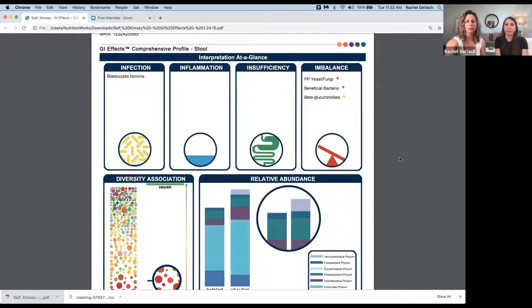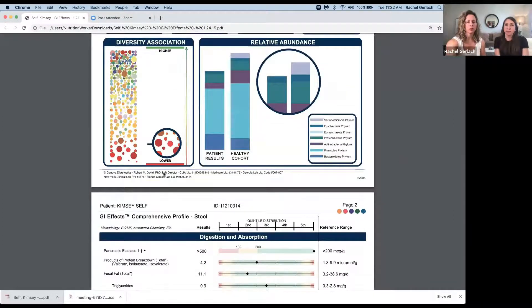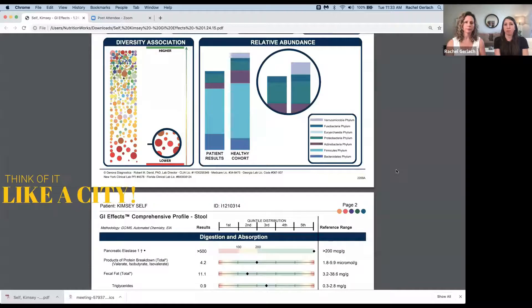So let's move down here. Let's look at this diversity association. What does that indicate? So diversity association and relative abundance—I'm going to give an analogy. You can think of the gut microbiome like a city. Both of these are reflective of the microbial diversity and quantity within the gut bacteria, those commensal bacteria. So if you think of it like a city, in a city you want to have a lot of different kinds of people, so you have doctors, lawyers, janitors, mechanics, teachers, so all of our roles are fulfilled.